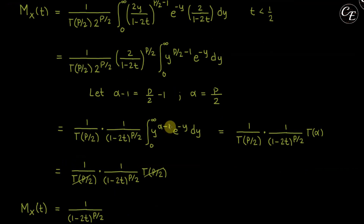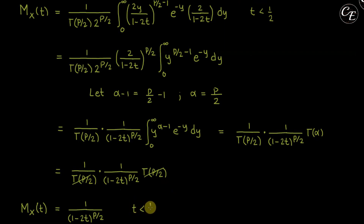Our moment generating function is [1/(1−2t)]^(p/2), valid under the restriction that t < 1/2, which is required to make the MGF valid for the chi-squared distribution.